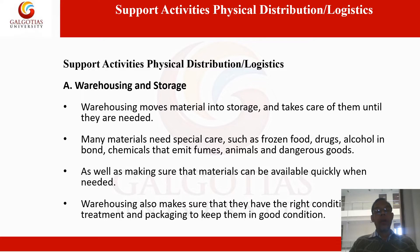Warehousing and storage: once finished goods have been produced by the manufacturing plant, they are moved to the finished goods warehouse where they are stored until a customer order comes and the goods are supplied to the consumer. Many materials will need special care — such as frozen food, drugs, chemicals, etc. — in terms of temperature or environment.